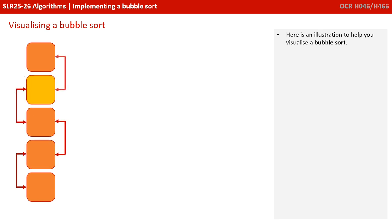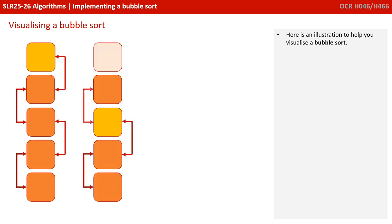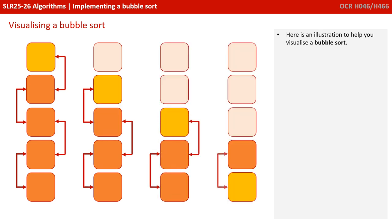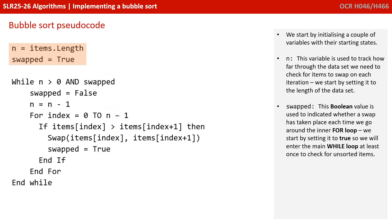Here's an illustration to help you visualize a bubble sort. Here's some pseudocode. We start by initializing a couple of variables with their starting states. The variable n is used to track how far through the data set we need to check for items to swap on each iteration — we start by setting it to the length of the entire data set. The boolean variable swapped indicates whether a swap has taken place each time we go around the inner for loop. We start by setting it to true, so we'll enter the main while loop at least once to check for unsorted items.